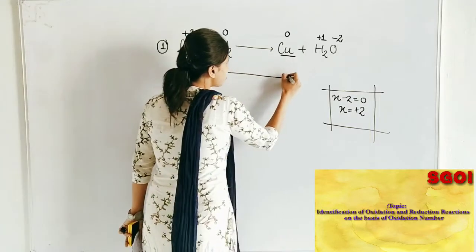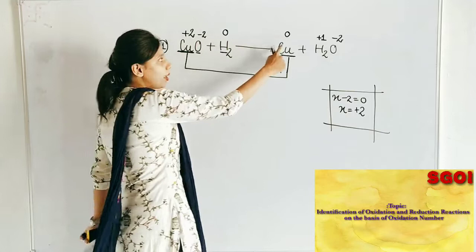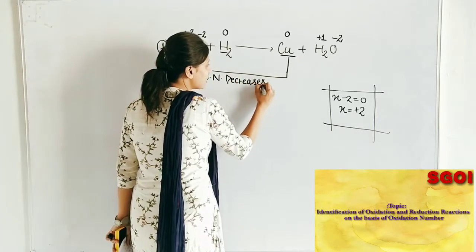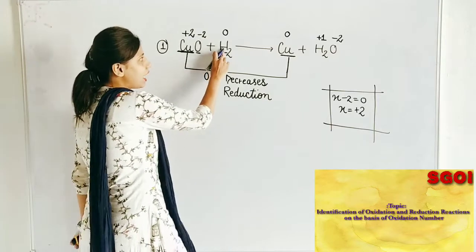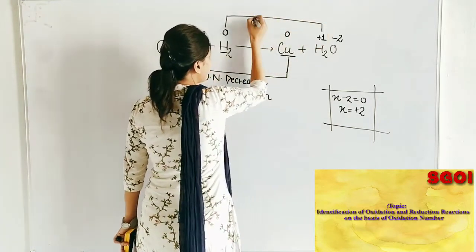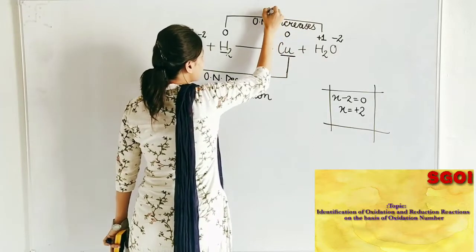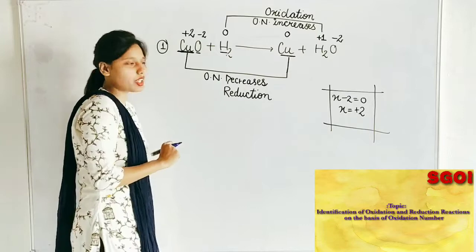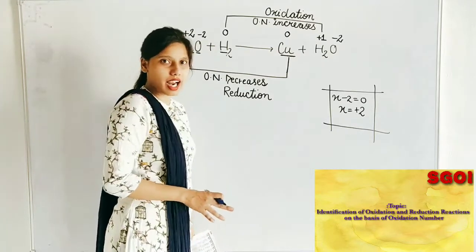Now compare the oxidation numbers. In the formation of Cu from CuO, oxidation number decreases from plus 2 to 0 — that is, decreases by 2 units. So this reaction is reduction. For hydrogen, oxidation number changes from 0 to plus 1 — oxidation number increases — so this reaction is oxidation. Therefore, in this whole reaction both oxidation and reduction take place, so we can say this reaction belongs to redox reaction.